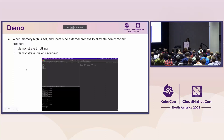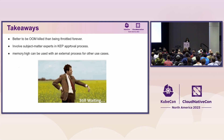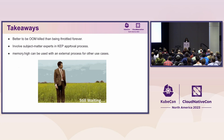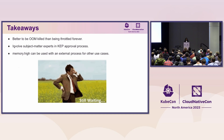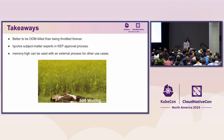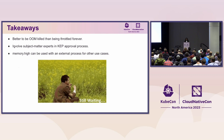My key takeaway from this is that it's better to be OOM-killed than to be throttled forever without any signal, not knowing what to do. Another takeaway is that when a KEP involves very deep kernel expertise, it might be better to involve subject matter experts in the KEP approval process early on so we get insights into whether the design looks fine or not.